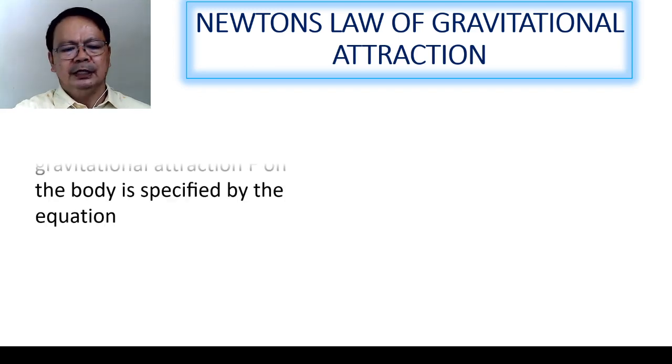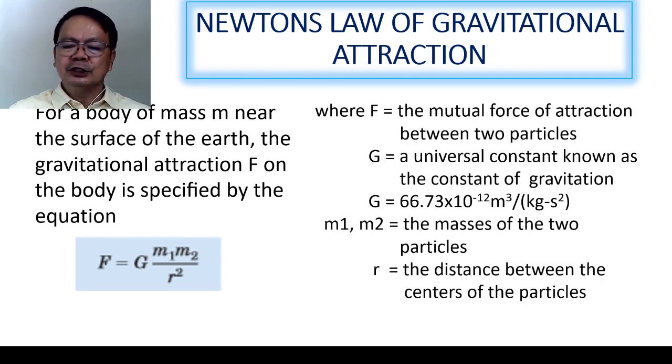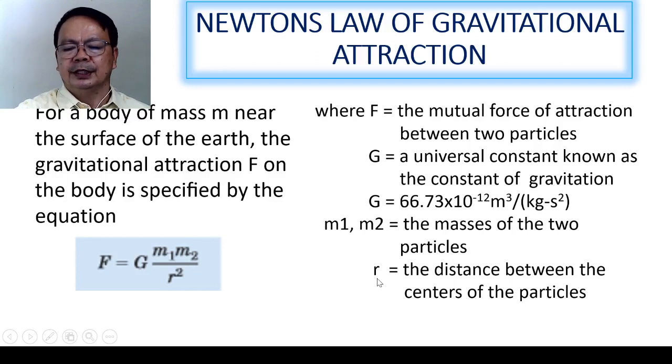And this gravitational force can be computed when the body is near the surface of the Earth, and it is expressed by the following expression. F shall be equal to the product of G times M1 times M2 divided by R squared. Where F is the mutual force of attraction between the two particles. G represents the universal constant known as the constant of gravitation, and that is equal to 66.73 times 10 to the negative 12 meter cube per kilogram second square. M1 and M2 represent the mass of the two particles, and R represents the distance between the centers of the particles.